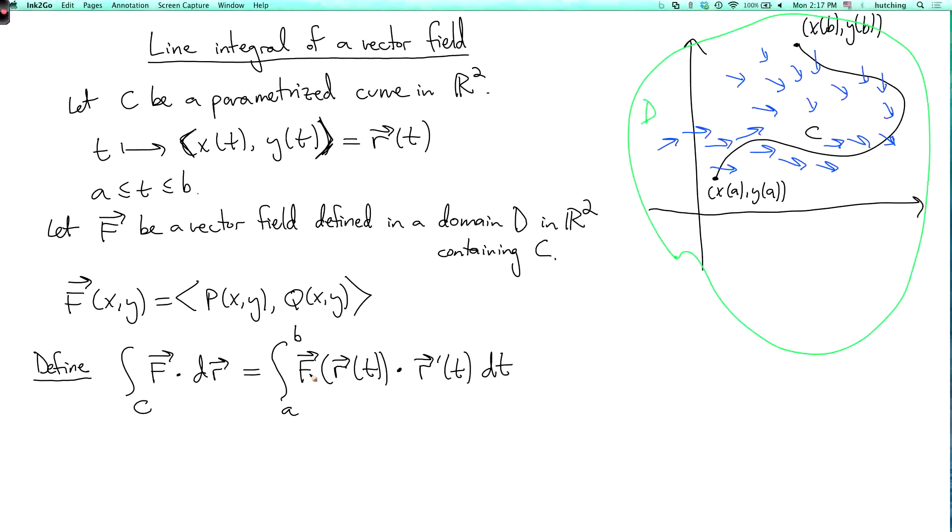So what does this mean? If you look at the picture, the velocity vector of the curve, let's draw it in red, it's going to go like this. Here the velocity vector is pointing in roughly the same direction as the vector F, which is in blue. So we're going to get some positive contribution over here. And here also we're going to get some positive contribution. Here, the vector F is perpendicular, or almost perpendicular, to the velocity vector of the curve. So we're going to have very little contribution to the integral.